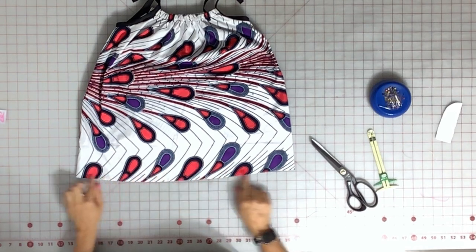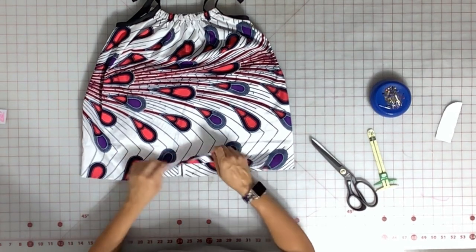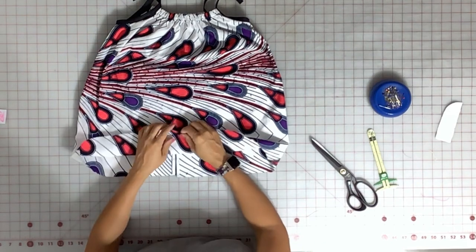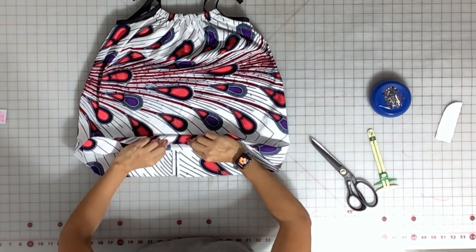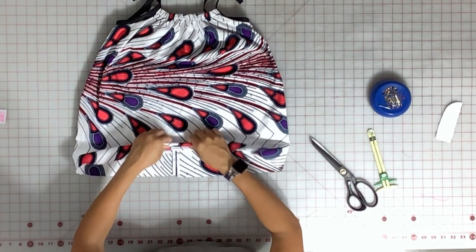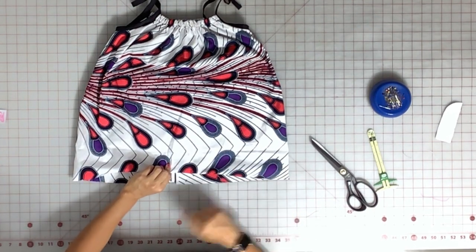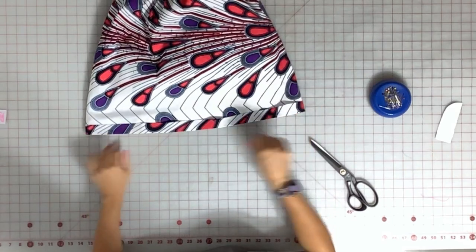Now it's time to actually hem this thing. So fold it over a quarter inch and then you can do an additional two inches. It's up to you. You don't have to go the entire two inches. You can do a one inch hem, a two inch hem, whatever you'd like. Hem your dress.